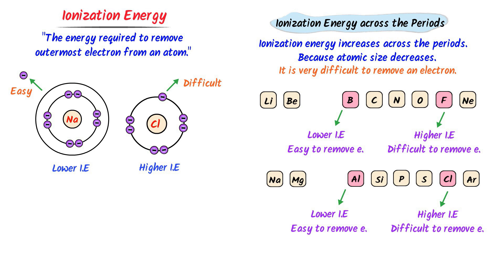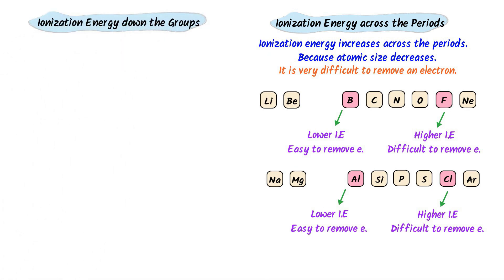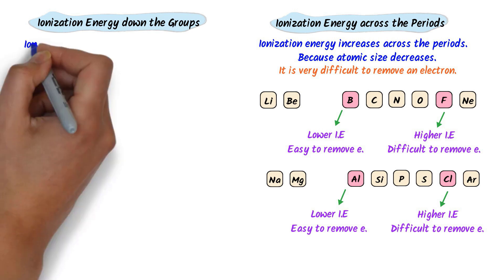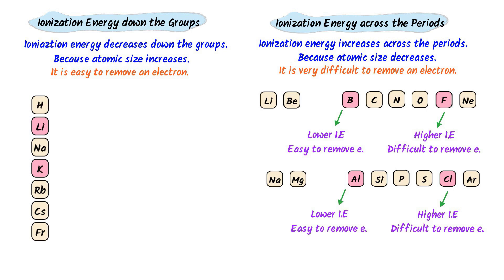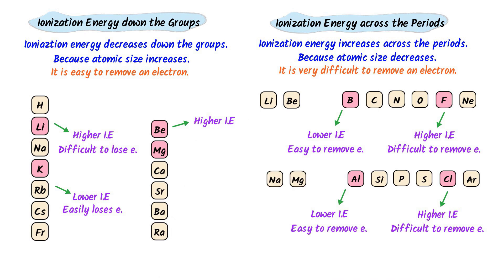Just remember that ionization energy increases from left to right across the period. Now we will learn trends of ionization energy down the group. Remember that ionization energy decreases as you go down the group from top to bottom. It is because atoms are larger at the bottom and the attraction between the nucleus and the outermost electron is weak, hence atoms can easily lose electrons. For example, in the first group, potassium has much lower ionization energy than lithium because potassium is larger in size and its outer electron is farther from the nucleus, so it can easily lose electrons.